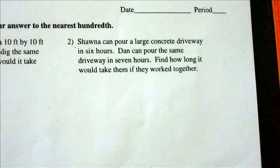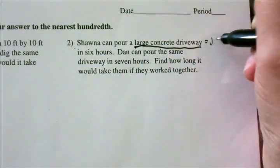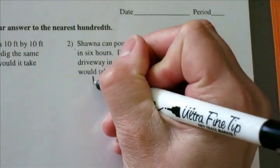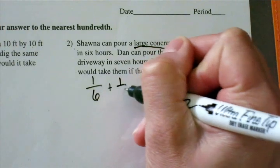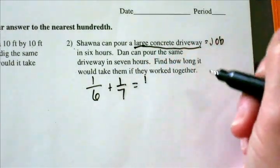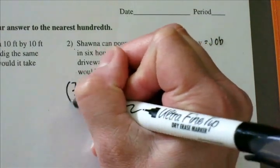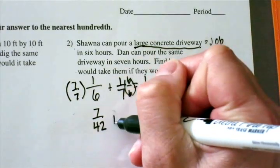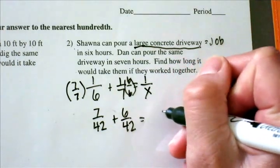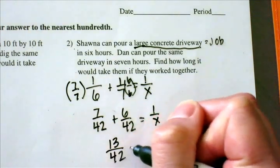Moving on to problem 2: Shauna can pour a large concrete driveway in 6 hours. Dan can pour the same driveway in 7 hours. Find out how long it would take them if they worked together. My job is going to be one concrete driveway. Shauna can do that job in 6 hours, Dan can do the same job in 7 hours. Taking a common denominator of 6 times 7, I'll have 7 over 42 plus 6 over 42 equals 1 over x, giving me 13 over 42 equals 1 over x.